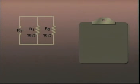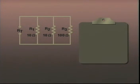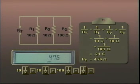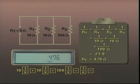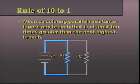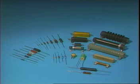To demonstrate a very helpful final rule for resistors in parallel, let's return to our earlier two-resistor circuit where the total resistance was 5 ohms for two 10 ohm resistors in parallel. Adding a third resistor of 100 ohms in parallel gives a total resistance of 4.76 ohms — very close to the original 5 ohms. This leads to the rule of 10 to 1: when calculating parallel resistance, it is okay to ignore any branch that is at least 10 times greater than the next highest branch resistance, as the value won't be affected significantly. This concludes our lesson on resistance and resistors.